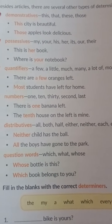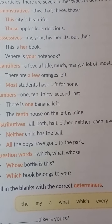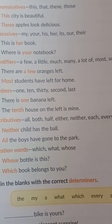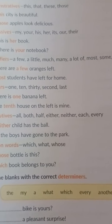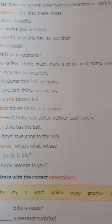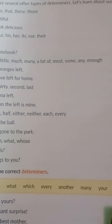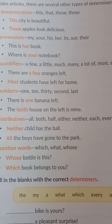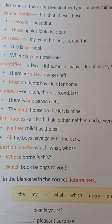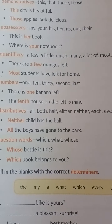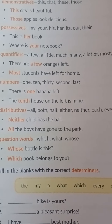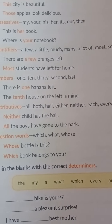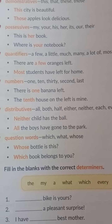Quantifiers tell us about the quantity of the noun — like a few, a little, much, many, a lot of, most, some, any, enough. For example: 'These are a few oranges left.'